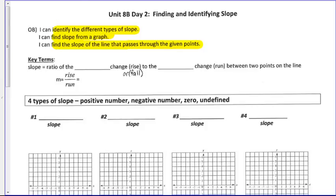There is one key term in this section, and that is slope. Slope is the ratio of the vertical change, the rise or the fall, to the horizontal change, which is the run between two points on the line. You will see slope symbolized as m. Basically, it's just rise over run, and it will always be in a fraction form.